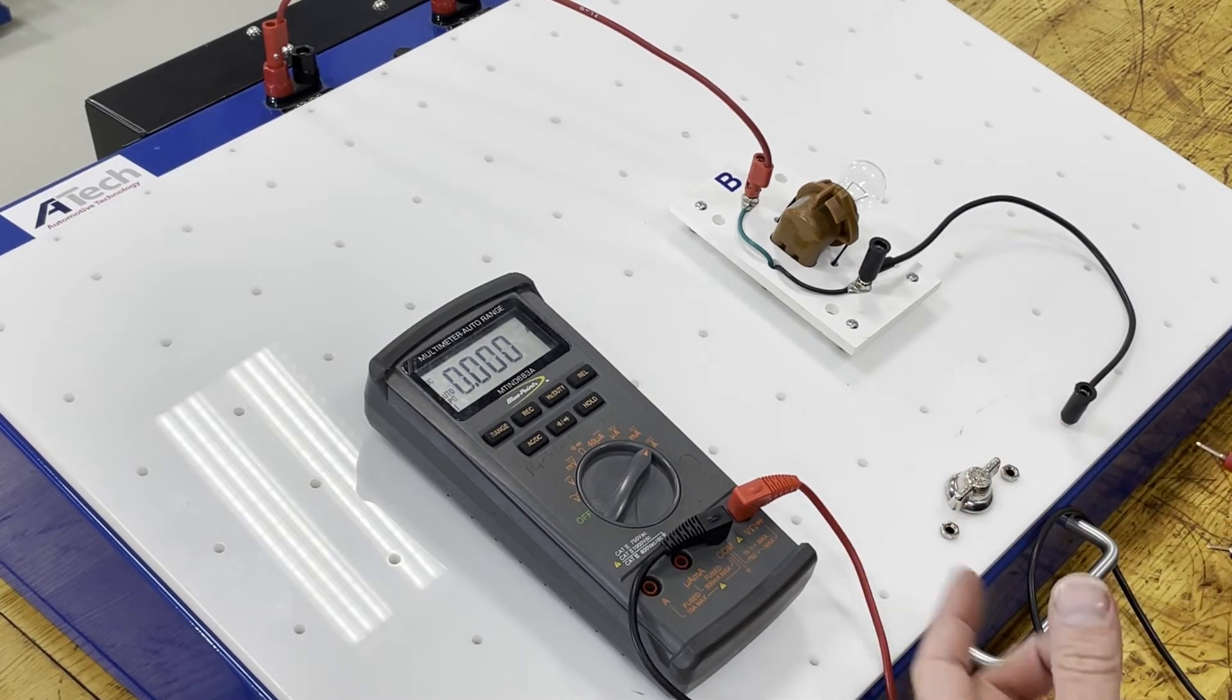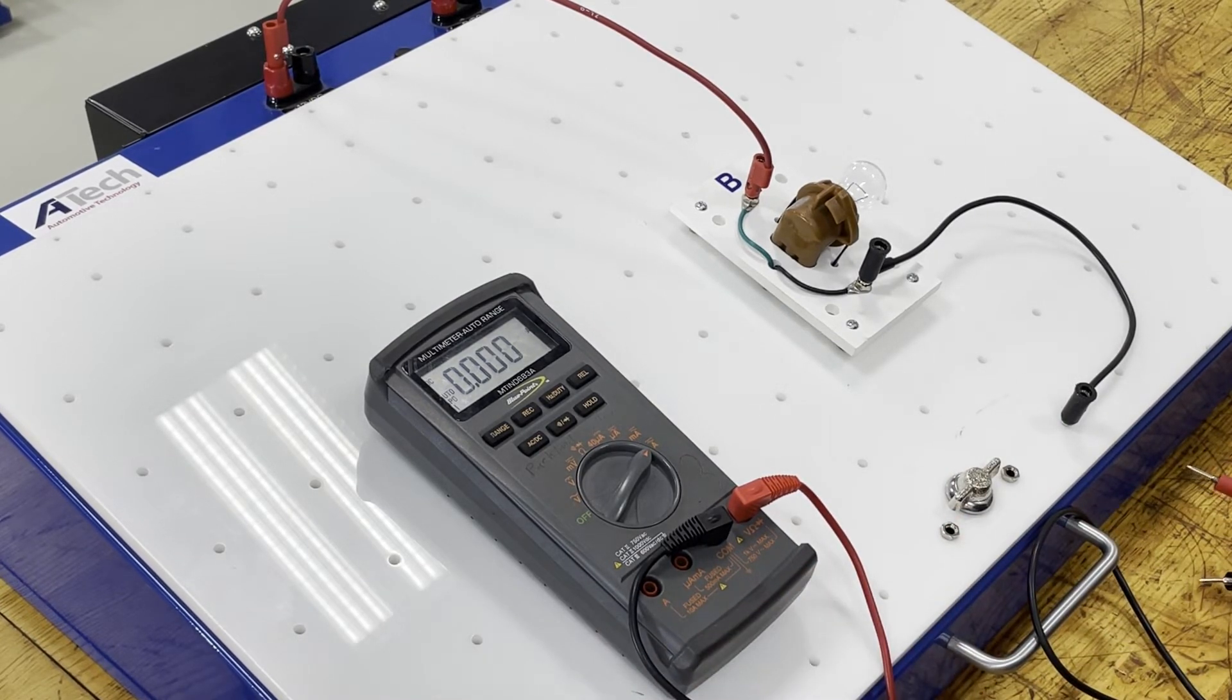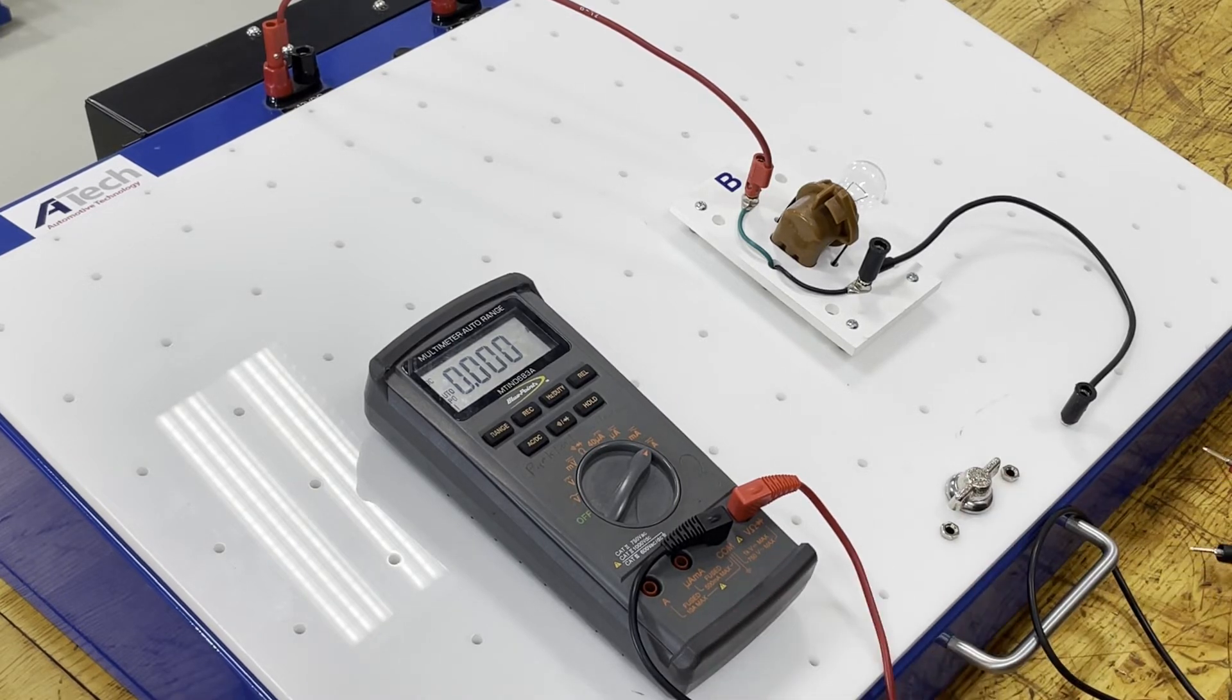As we look at the bottom here we'll see that the milliamp port is fused up to 500 milliamps so that's only half an amp. If I exceed that I pop the fuse. The other one is fused and set all the way up to 10 amps and so it's best to start on the larger scale then move down.